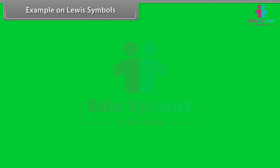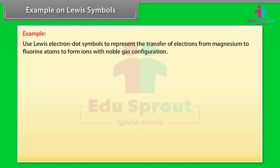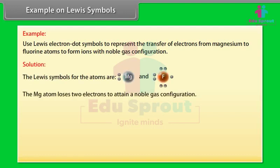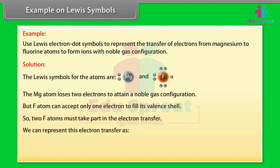Let's take an example on Lewis symbols. Use Lewis electron dot symbols to represent the transfer of electrons from magnesium to fluorine atoms to form ions with noble gas configuration. The Mg atom loses 2 electrons to attain a noble gas configuration, but an F atom can accept only 1 electron to fill its valency shell. So 2 F atoms must take part in the electron transfer.